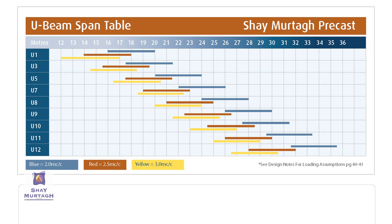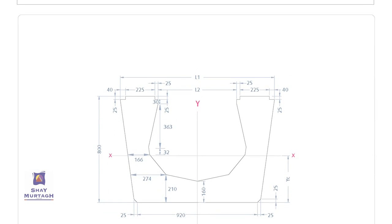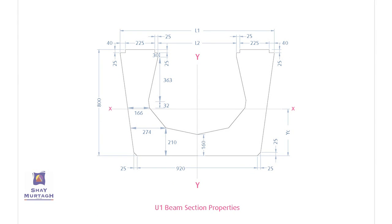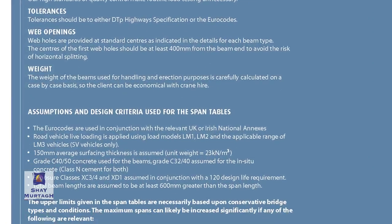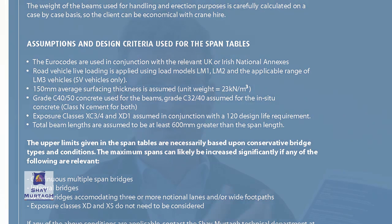These span tables are typically given for a variety of beam centers, and represent the maximum achievable span for a specific size of beam at a specific beam center. These span tables are necessarily conservative, based on conservative assumptions used in the preliminary design estimate of what spans these beams can achieve. Those design assumptions are also contained in the back of the manual.